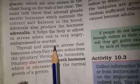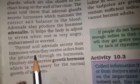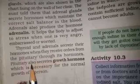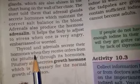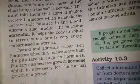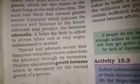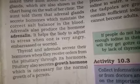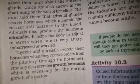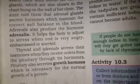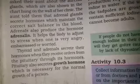The thyroid and adrenal glands secrete their hormones when they receive orders from the pituitary gland through its hormones. All glands depend on the hormones of the pituitary gland. The pituitary gland is the master gland — it gives the orders, and then the other glands carry out their work.